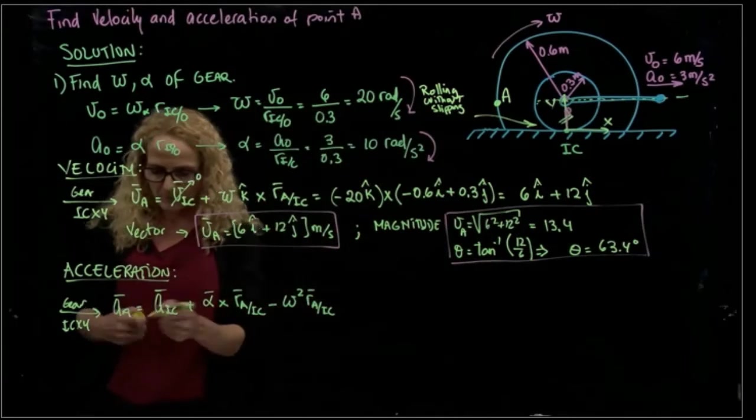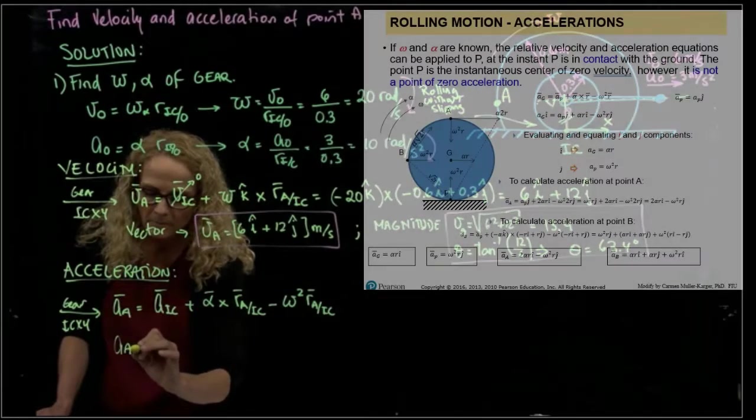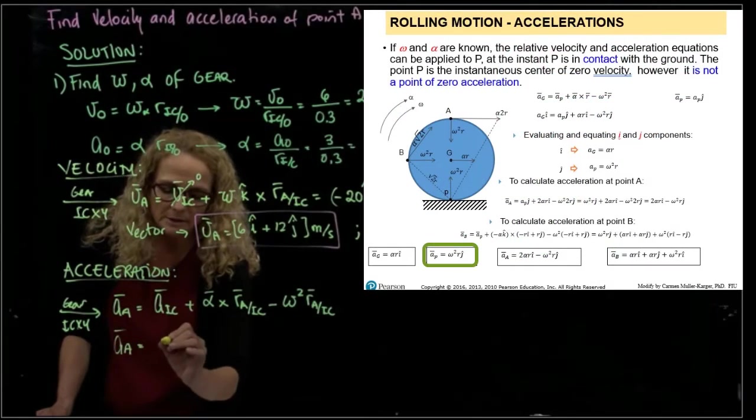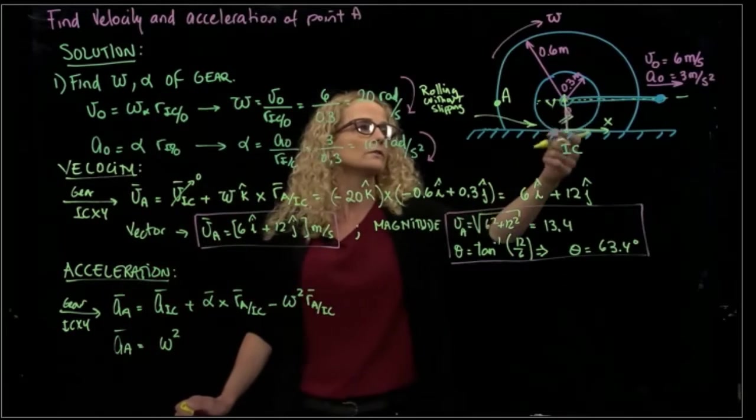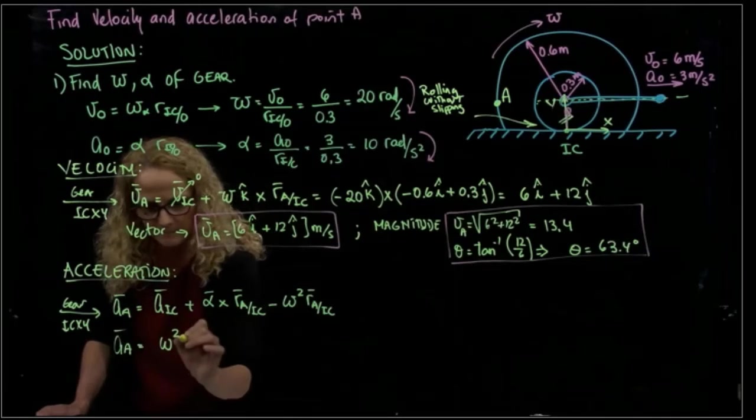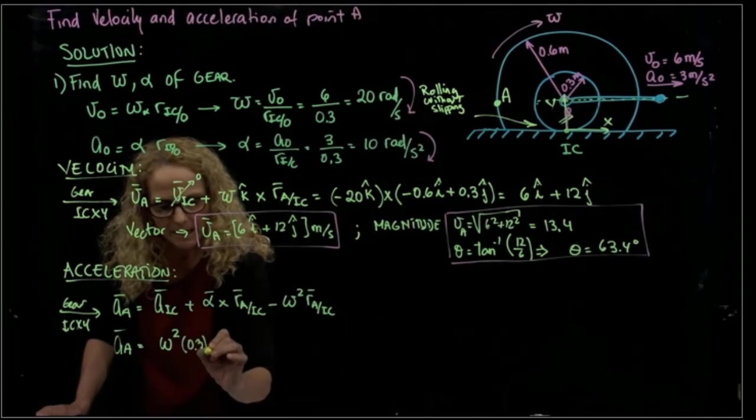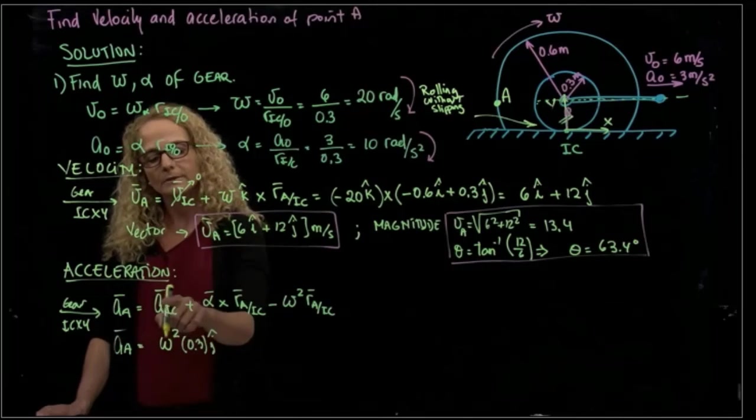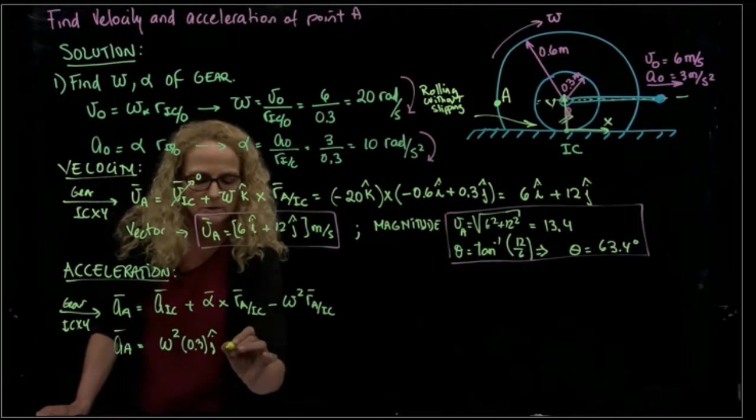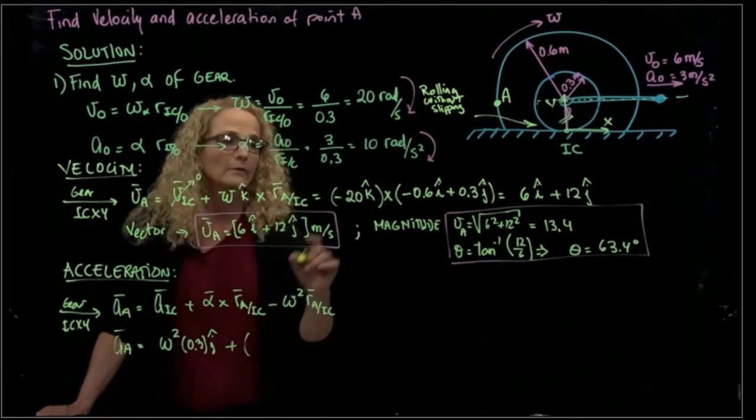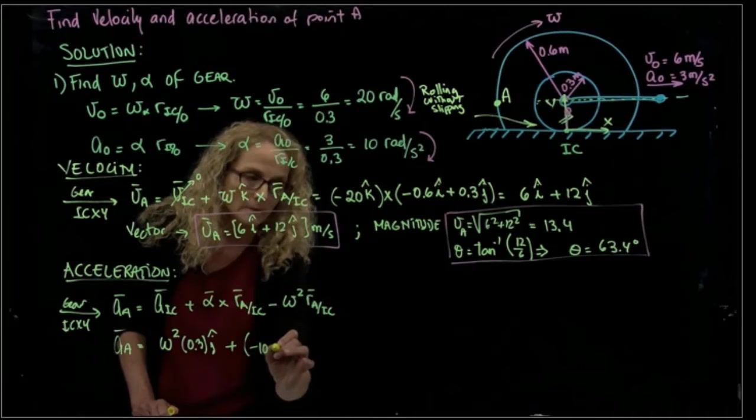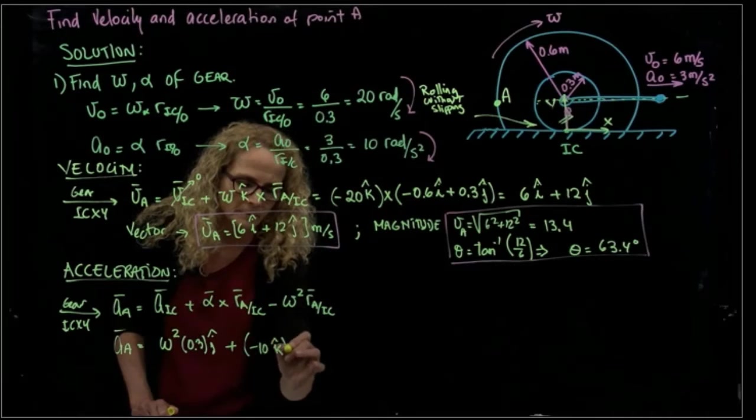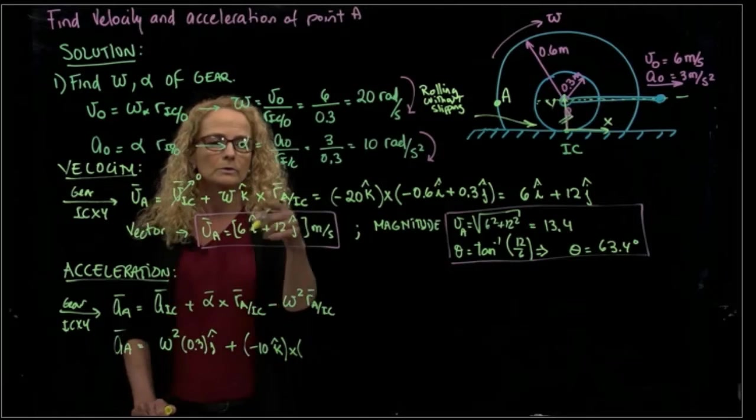And if you remember that from the theory, that normal acceleration is omega squared times the radius of curvature, which in this case is 0.3 and is in J. So this is the acceleration of the instant center of rotation plus. Then we have our alpha that we just calculated.